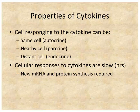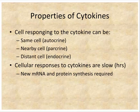Cytokines can work in an autocrine, paracrine, or endocrine fashion. For example, macrophages secreting TNF can have that TNF activate the same macrophage or activate nearby macrophages. The responses to cytokines are also going to be slow, primarily because the cytokine leads to the production of something else and turns on genes — and that takes time to transcribe and translate.